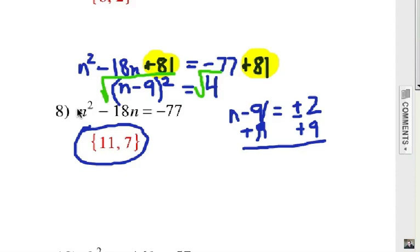And so, n can be 2 and 9 which is 11 or negative 2 and 9 which is 7. Alright, final answer 11 and 7. Two answers possible.